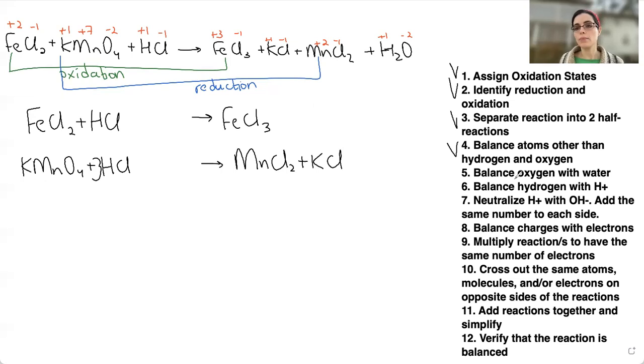Now, number five, balance oxygen with water. On the oxidation part, we don't have any oxygen, so we can skip that. For the reduction part, we have four oxygens on the reactant side. We don't have any oxygens here. So I will add four molecules of water. Why? Because each molecule of water contains one oxygen. So I need four molecules of water to make up for four atoms of oxygen here. Done.